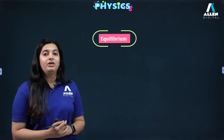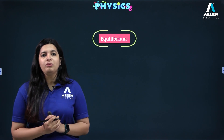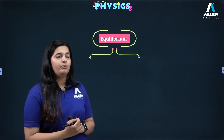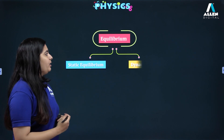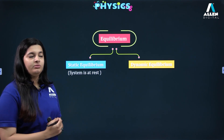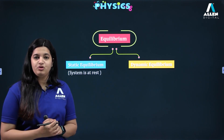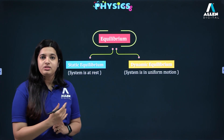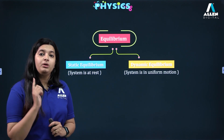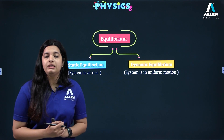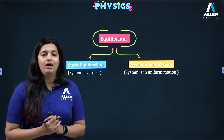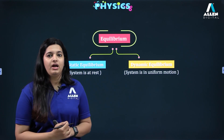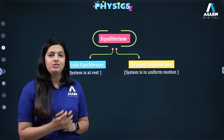Under equilibrium, a body can be in two states: at rest or in uniform motion. On the basis of their state of motion, we have two categories of equilibrium. First is static equilibrium, where the system of charges is at rest. Second is dynamic equilibrium, where the system of charges is in uniform motion. Here we will be studying majorly about static equilibrium, in which charges are at rest.